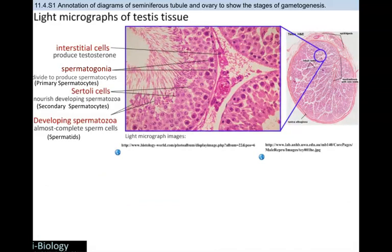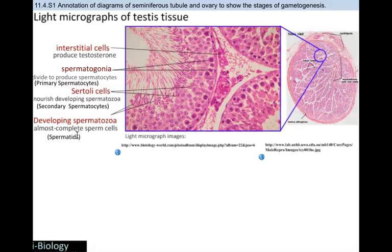Here are the answers. The interstitial cells are on the outside, producing testosterone and aiding in specialization of these gametes. Then you've got the spermatogonia — the parent cells going through mitosis — because those cells need to divide and make copies of themselves so they can then go through meiosis to produce the primary spermatocytes. You've also got your Sertoli cells, which nourish the developing spermatozoa — at that point they would be secondary spermatocytes. The developing spermatozoa continue to develop into spermatids, which are almost complete sperm cells.